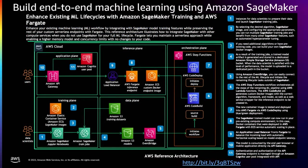SageMaker can be used to build end-to-end machine learning workloads — right from data preparation, model build phase, model training and tuning, to model deployment and management. This is the SageMaker reference architecture to build end-to-end machine learning workloads. You can look at this reference architecture for more details.